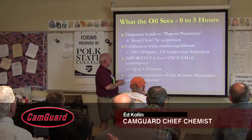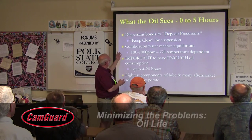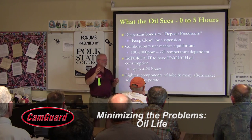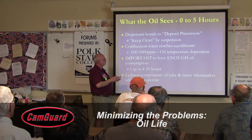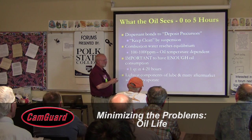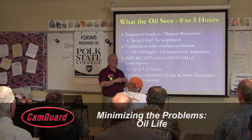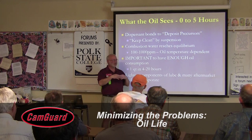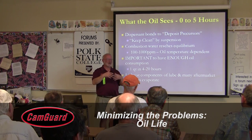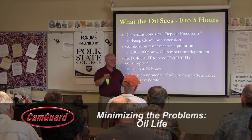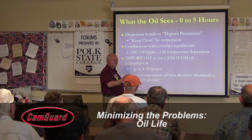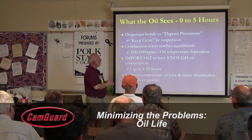What does your oil see in its first hours of life? The dispersant binds to deposit precursors or varnish precursors — reactive molecules floating around in the oil from blow-by. These deposit precursors stick to metal surfaces, then polymerize or cross-link with neighbors to form a film. The film starts out clear — we call that a lacquer film. It turns slightly amber and becomes a varnish film. Keep heating it longer and it turns black — now we call that a carbon film. They're all the same thing, just at different stages of life — that's the lifecycle of the deposit.